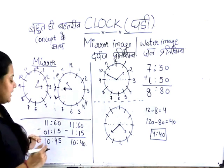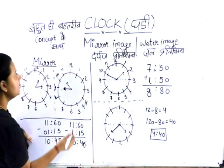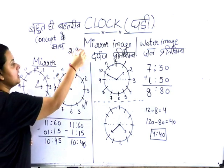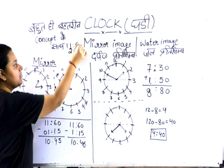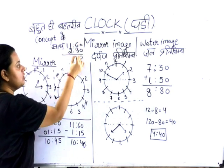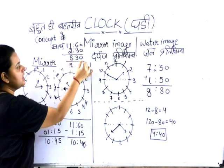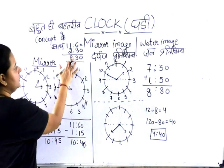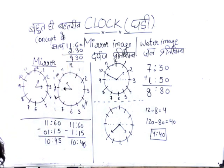With this method, you can find the mirror image of any given time. I will tell you: remove the mirror image from 2:30 minutes. How will it be? 11:60 minus 2:30 equals 9:30 minutes. That is the correct answer.